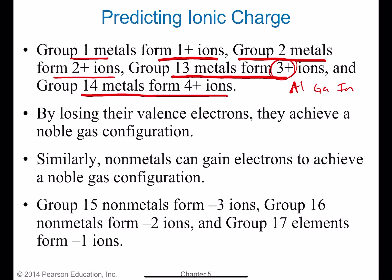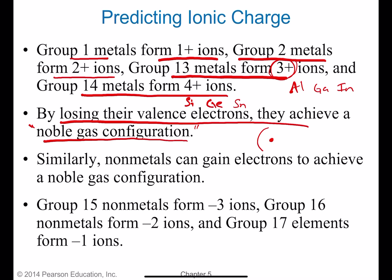Group 14 elements like silicon and germanium form four plus ions by losing four valence electrons. By losing their valence electrons, metals achieve a noble gas configuration — meaning they end up with a completely full outer shell. For example, if an atom has two valence electrons in the outermost level and loses them, the outermost level is now the next inner shell, which is totally full. That's what noble gas configuration means: the atom has the same number of electrons as a noble gas.